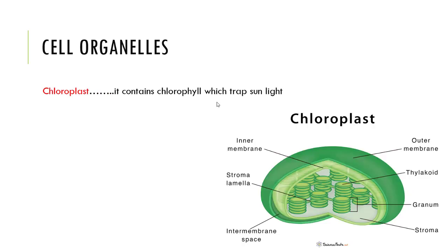The next one: chloroplast. Chloroplast contains chlorophyll which traps sunlight. Chloroplasts are the part of plants that contain chlorophyll; they trap energy from the sun. Plants use this energy to make food.